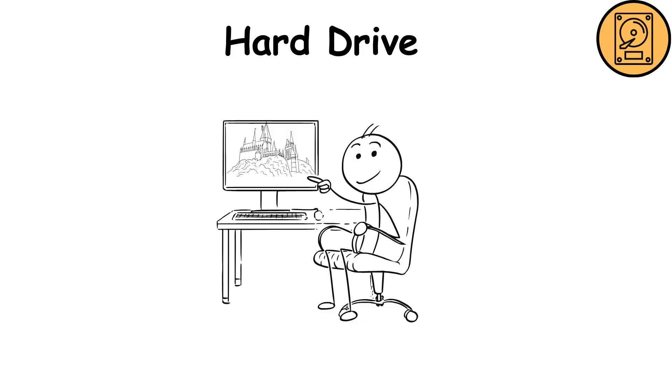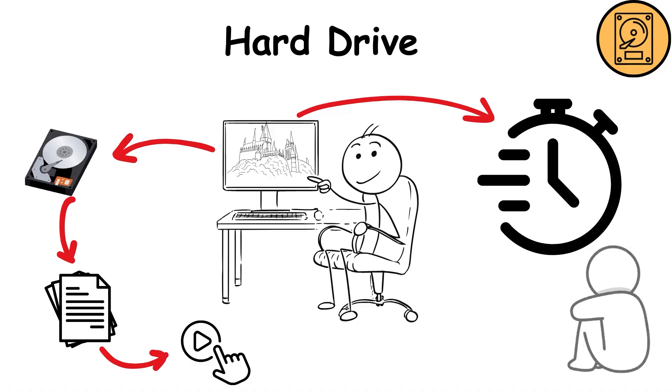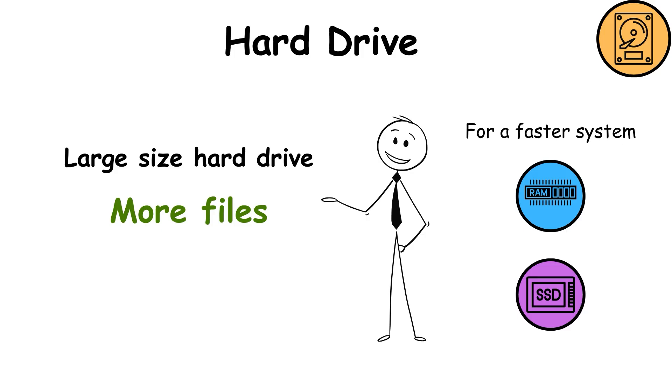For example, if you open a movie saved on your hard drive, your computer first locates the file, then plays it. If the hard drive is slow, the movie will take longer to start. The same applies to games, programs, and even boot times. The bigger the hard drive, the more you can store. But speed requires faster components like RAM or SSDs.